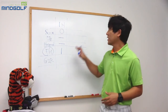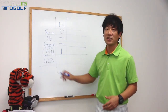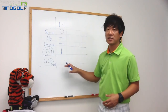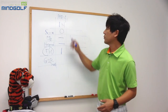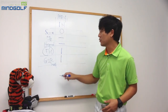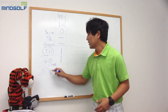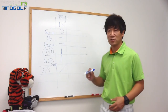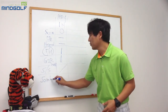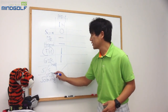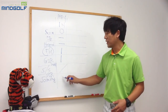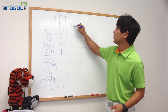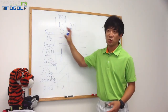G.I.R.은 Green in Regulation, 한국말로는 정규온입니다. 예를 들어 파4에서 두 번째 샷이 그린에 올라간 경우가 G.I.R.입니다. 그 다음 샌드 세이브도 기록합니다. 벙커샷을 했다면 벙커샷을 잘 했는지 보는 게 샌드 세이브입니다. 그리고 스크램블링(SCR)도 표시합니다. G.I.R.을 했으면 스크램블링은 해당 없음으로 표시하고, 마지막으로 퍼트 개수를 씁니다. 예를 들어 투 퍼트를 했다면 2를 적습니다.